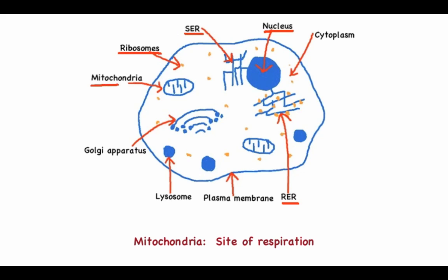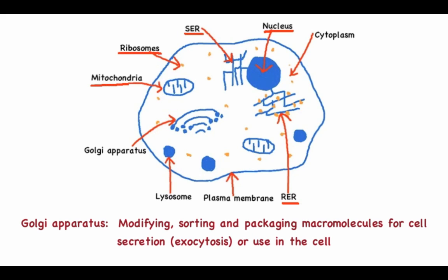Mitochondria are the site of cell respiration, while the Golgi apparatus is involved in modifying, sorting and packaging macromolecules for cell secretion by exocytosis or for use within the cell.